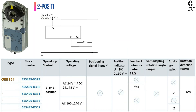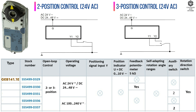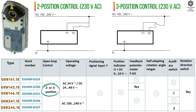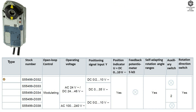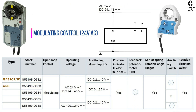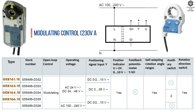Type summary: GEB 141, 142, 146, 341, and 346 are the two-position and three-position control variants. GEB 161, 163, 164, 166, and 361 are modulating control variants.